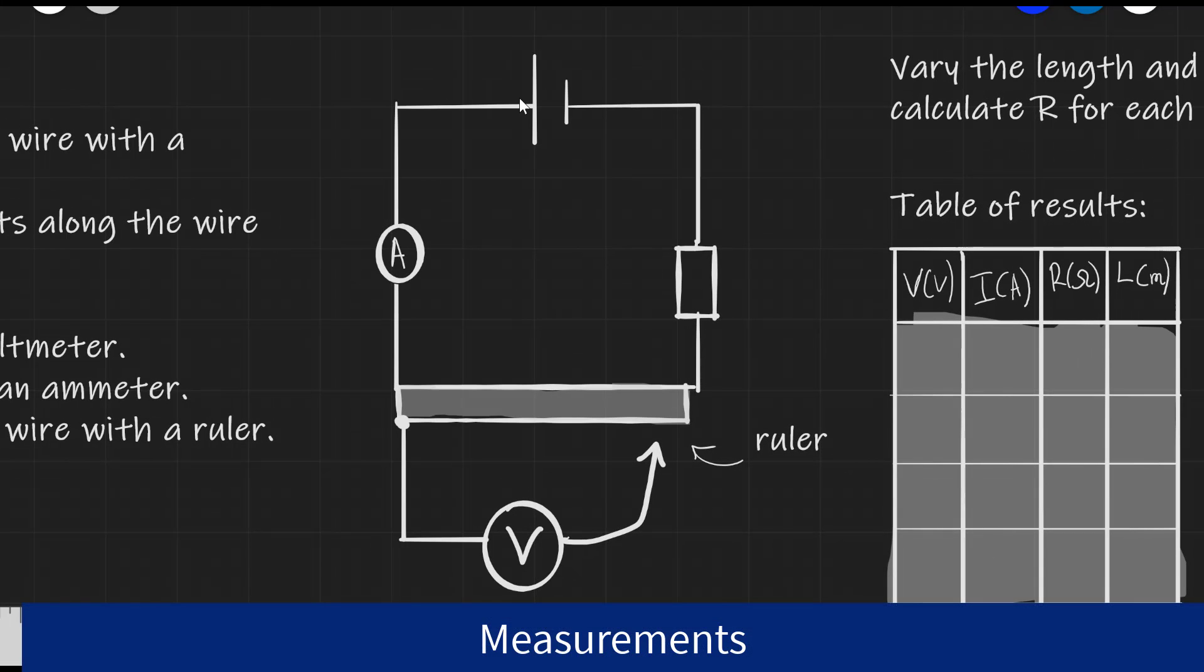Here is the circuit that we're going to be using. We have a power supply that is connected to an ammeter, as always in series. We also have a resistor. The purpose of this resistor is simply to limit the current that is going through the circuit at any given time for safety reasons and to avoid overheating of the wire.